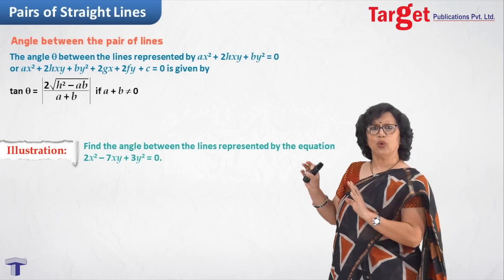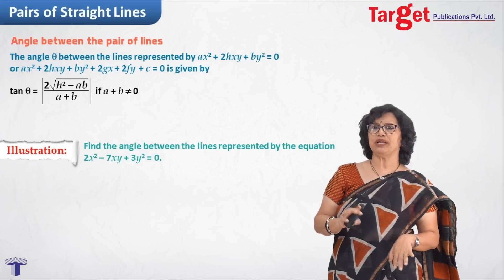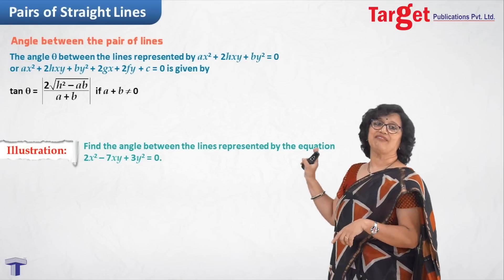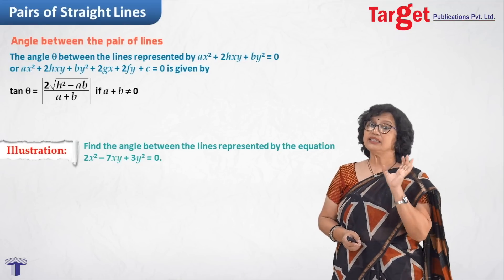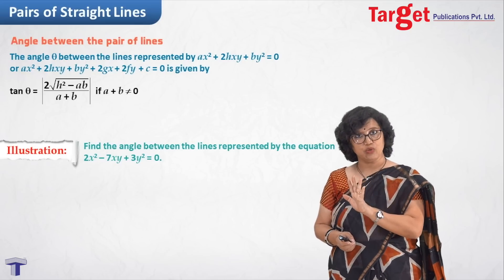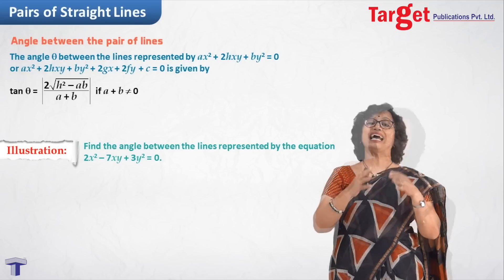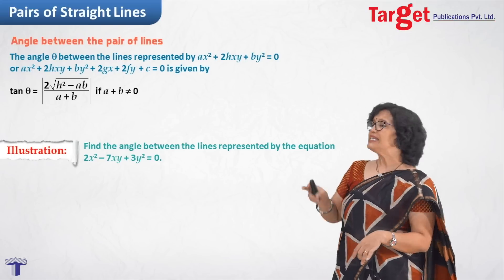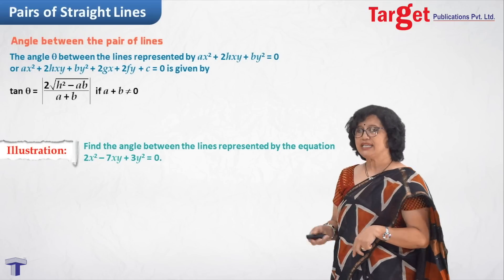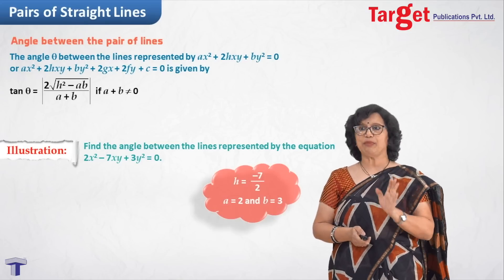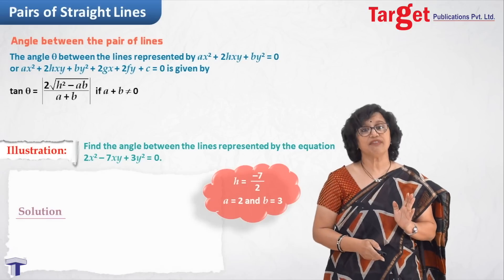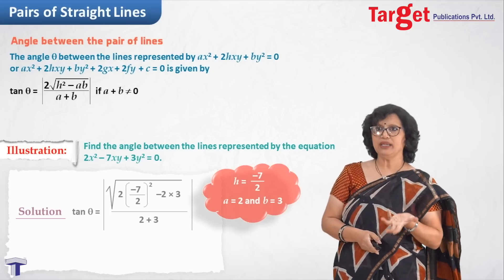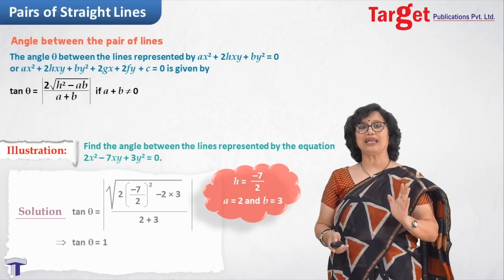Let me start with one illustration to understand how we are going to use the formula. Find the angle between the lines represented by 2x² - 7xy + 3y² = 0. This is of the form ax² + 2hxy + by² = 0, so a = 2, b = 3, and 2h = -7, meaning h = -7/2. Applying the formula, tan θ = 2√(h²-ab) / (a+b), substituting values and simplifying leads to tan θ = 1.